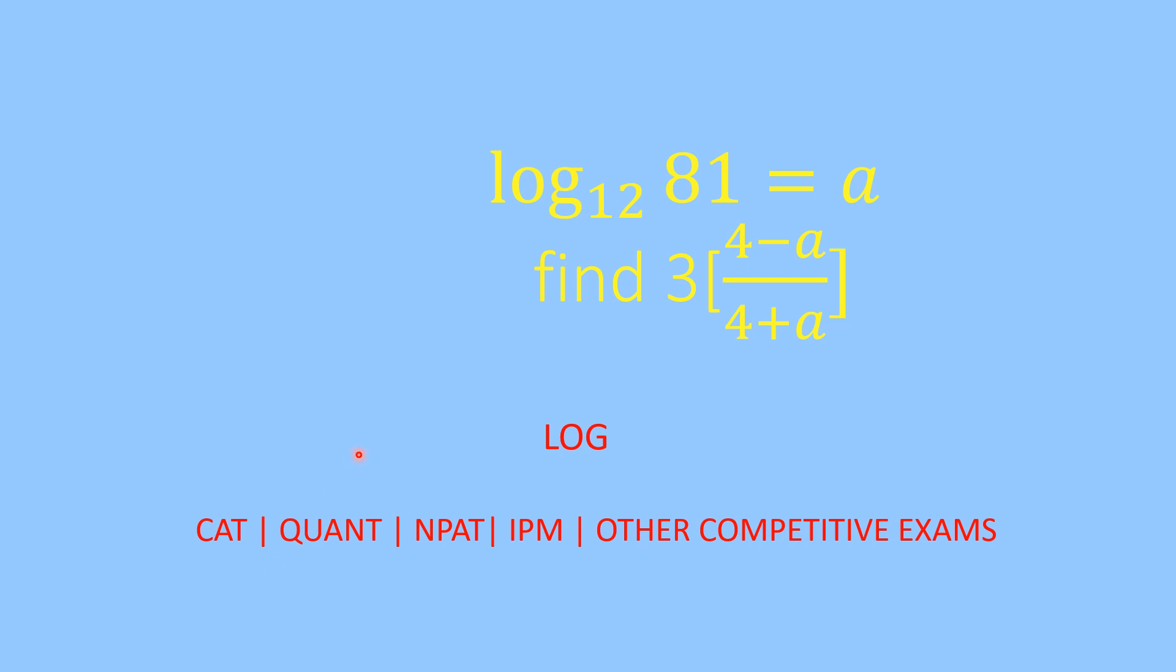Log of 81 to the base 12 is equal to a. You have to find 3 to the power of (4 minus a) upon (4 plus a).